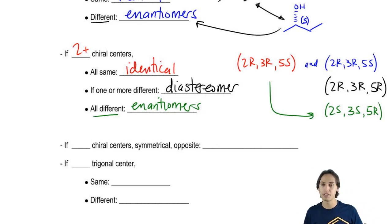So then let's go to a few more and then we'll be done. How about if we have two chiral centers that are symmetrical and opposite to each other? This is a special case.